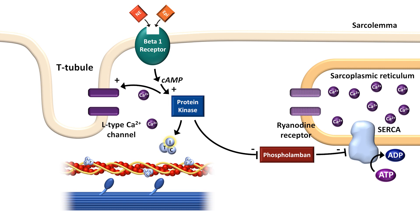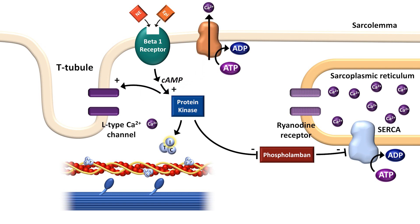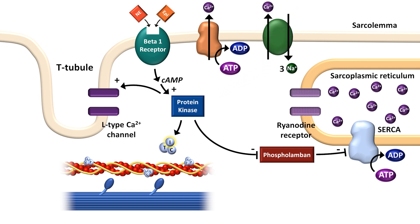Once relaxation and diastole are triggered, the calcium that initially entered the cell via the L-type calcium channels during phase 2 of the action potential needs to leave again. This is done via an ATP-dependent calcium pump in the cell membrane, as well as via a non-ATP-requiring sodium-calcium exchanger. By this point, the cell is in a relative resting state during phase 4 of the action potential, sitting at its resting membrane potential, waiting for the next action potential to come along.